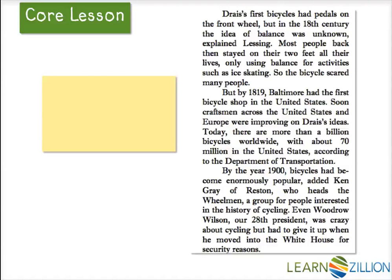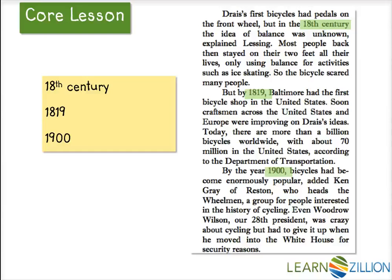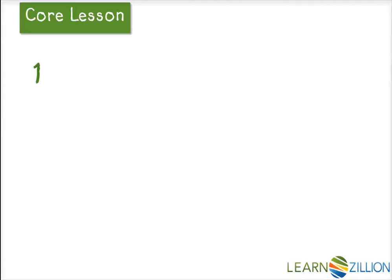Let's start to look at a few of those dates. I see the 18th century come up when the pedals came on the front wheel. So I'm going to write that date down so I don't forget. And there's 1819 when the first bicycle shop came out — I'm going to write that one down. And there's 1900 a little bit later. I'm going to write that one down.